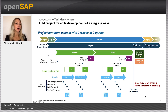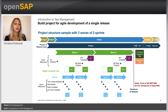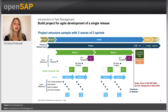Let's look at an example build project for agile development of a single release. At the top you can see the phases of the release cycle. Inside the prepare phase, we typically have waves and sprints. During each sprint, development and configuration should be done. Inside the sprints we have our work items, and for work items we typically run unit tests. Since a unit test is mainly done by the developer, we are not using test plans or test packages — the developer simply checks that their development or configuration is working correctly.